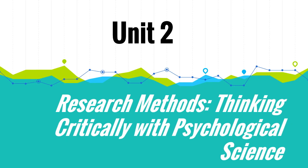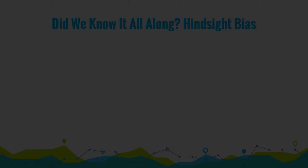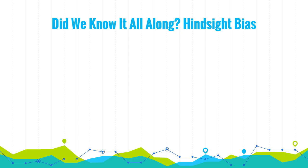Frank will be taking it away. I'll start us off with the first phenomenon of psychological science, which is hindsight bias. Hindsight bias is the tendency to believe that you knew it all along upon hearing research findings.